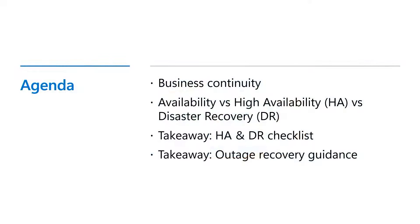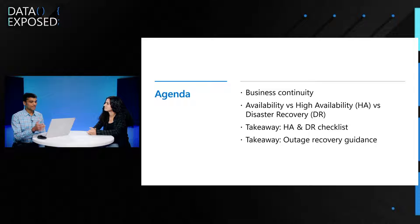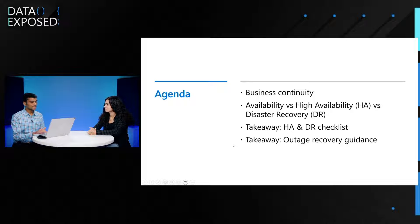Sure. So in general, when we talk about SQL DB high availability and disaster recovery, there are a lot of concepts that customers get confused with. My hope is at the end of this session, we break down what is business continuity and what are the three pillars that we think make part of business continuity. If you look at the deck I'm sharing, we'll start with understanding what is business continuity, then dive into the three pillars. And the two takeaways for this presentation would be the HADR checklist, which provides prescriptive guidance of what we think a customer should be following, and an outage recovery guidance.